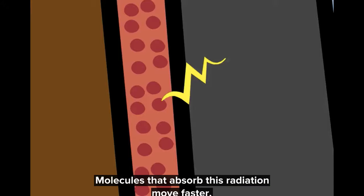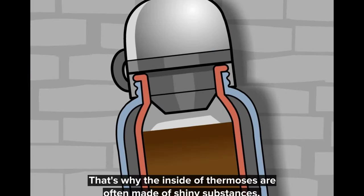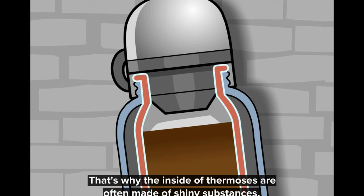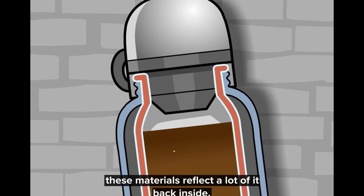Molecules that absorb this radiation move faster, same as they would through conduction. That's why the inside of thermoses are often made of shiny substances. Since radiation is a kind of light, these materials reflect a lot of it back inside.